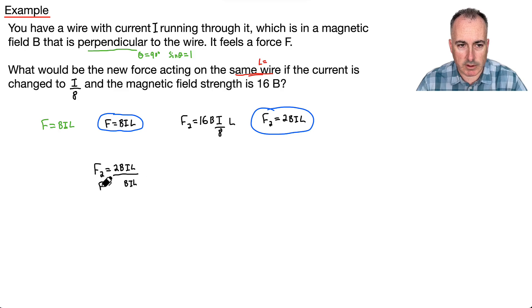Oops, I forgot the F equals. So this one here is how it would look like this. Whoops. So F2 over F equals 2BIL over BIL. And what can I do then with these? Well, do you notice then their stuff cancels out.